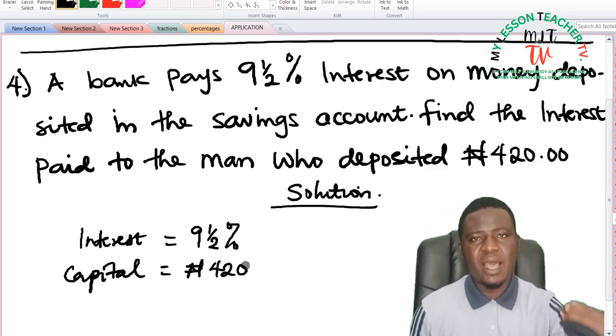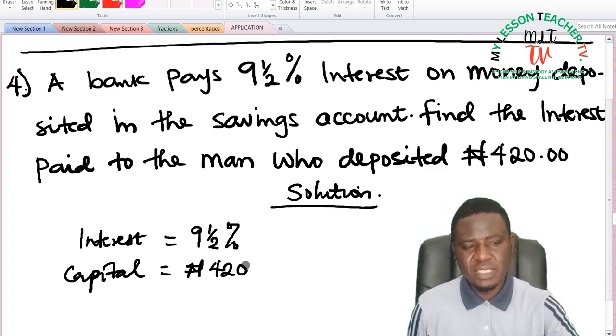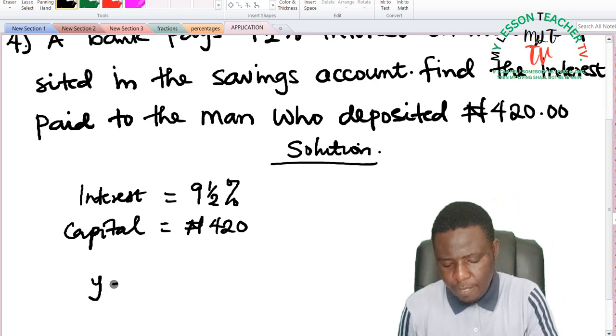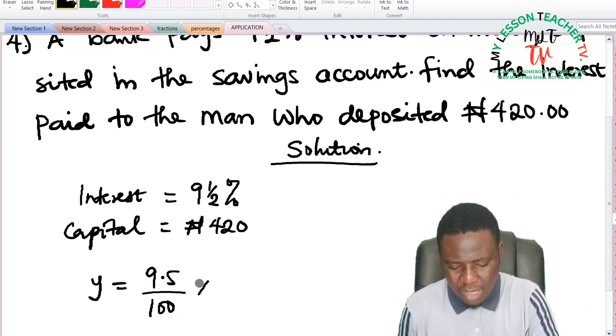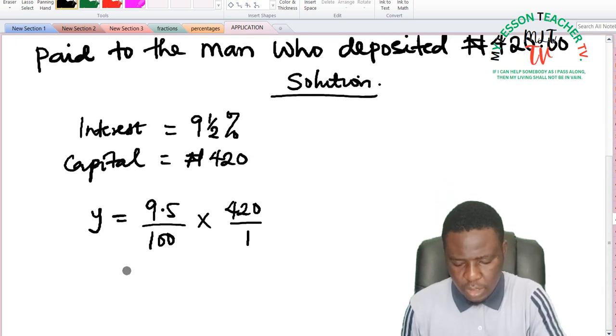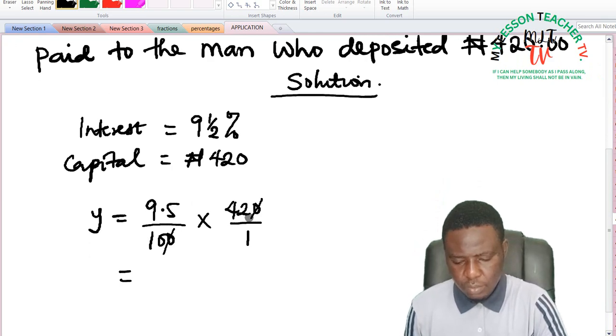And we are asked to find the interest. Now the question says he will be paid nine and a half percent of whatever is saved, so it therefore means that the interest, let's call it y, will be equal to 9.5 over 100 times 420 naira. So if you solve his interest now in terms of naira, 10 can divide and 5 can also divide.